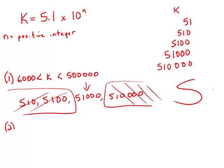Now, ignore statement number one. Focus purely on statement number two. Statement number two tells us k squared is 2.601 times 10 to the ninth.